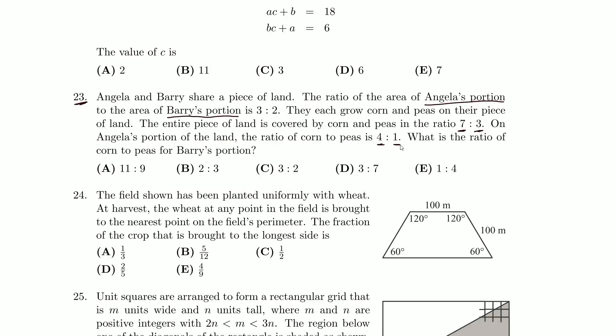Interesting. So there's a whole lot of ratios. Now remember, ratios can be turned into fractions pretty quickly. I want to know the ratio of corn to peas for Barry's portion of the land. How can we do this?